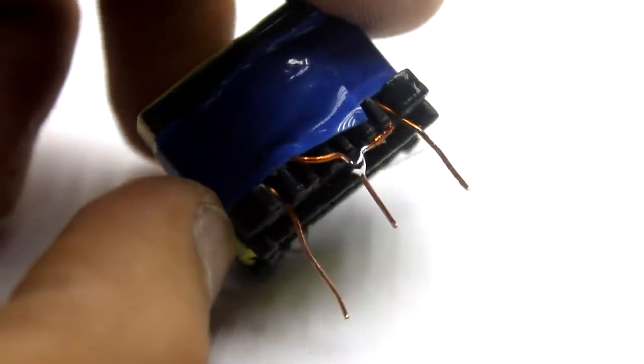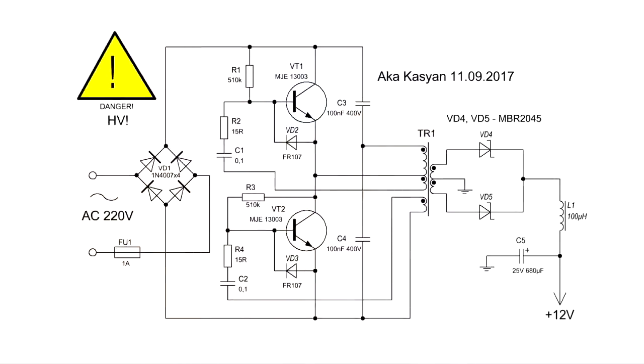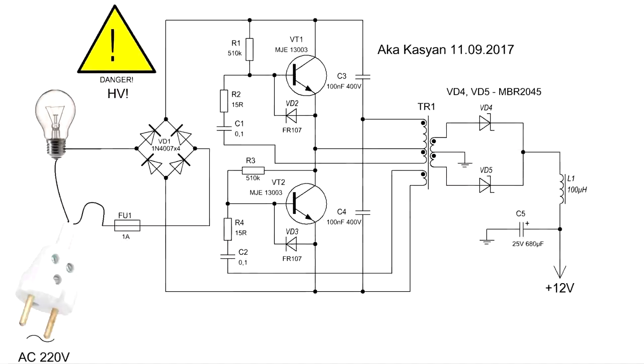Then, the beginning of the first arm is connected to the end of the second to form the midpoint. According to the circuit, this is the ground point. For safety, the first switching on of the circuit is necessarily done through a lamp of 20 to 40 watts.